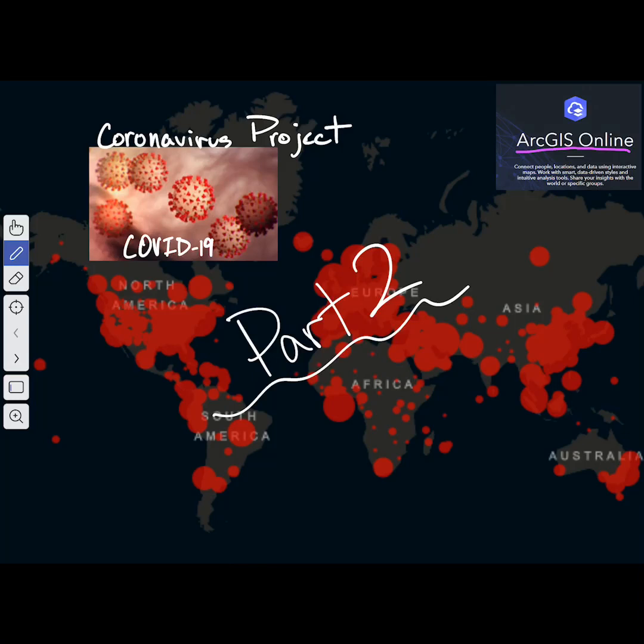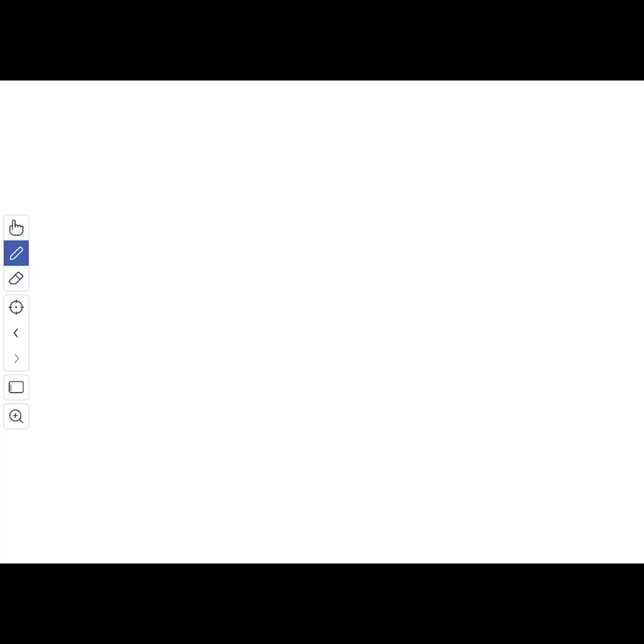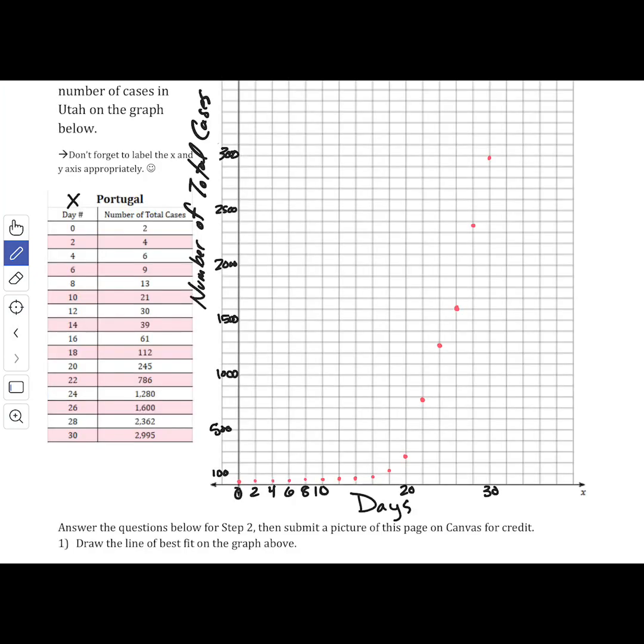Here we are, now continuing our coronavirus project. This is part two, so let's see what we've got. From part one, you've already created your scatter plot. Mine is Portugal because my example is using Portugal. Everybody else on this first one is using Utah. You guys are all the same on this one.